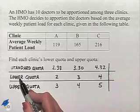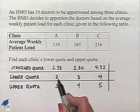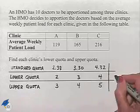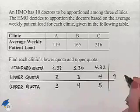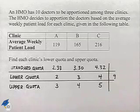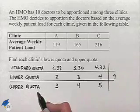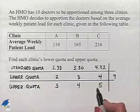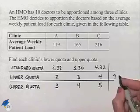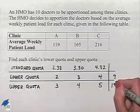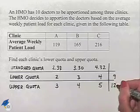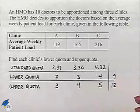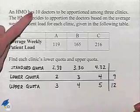Now let's look at our totals. Along the row for the lower quotas we have 2 plus 3 plus 4, which is 9. Along the row for the upper quotas we have 3 plus 4 plus 5, which gives us 12. However, notice that we're supposed to be apportioning 10 doctors.